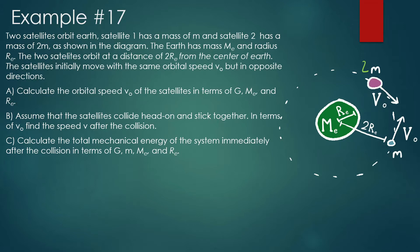Part A: calculate the orbital speed v_initial of the satellite in terms of g, M_e, and r_e. Part B: assume that the satellites collide head-on and stick together; in terms of v_initial, find the speed v after the collision. And last part, C: calculate the total mechanical energy of the system immediately after the collision in terms of g, lowercase m, capital M_e, and r_e.